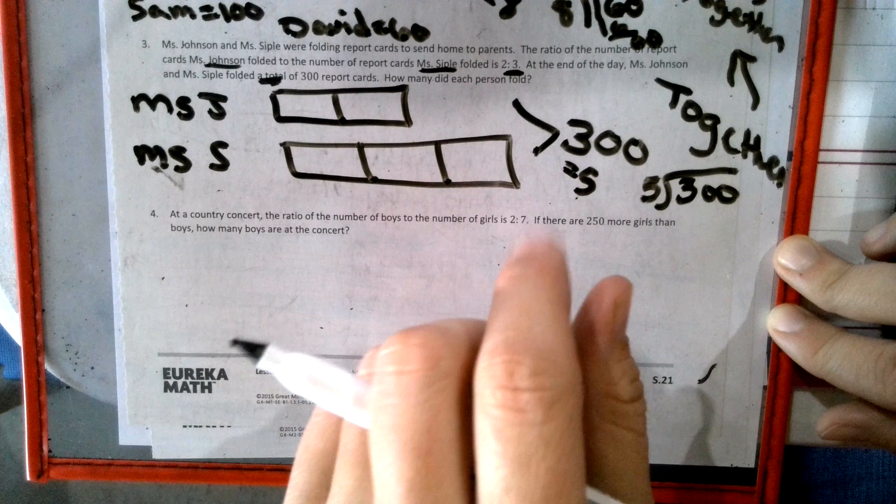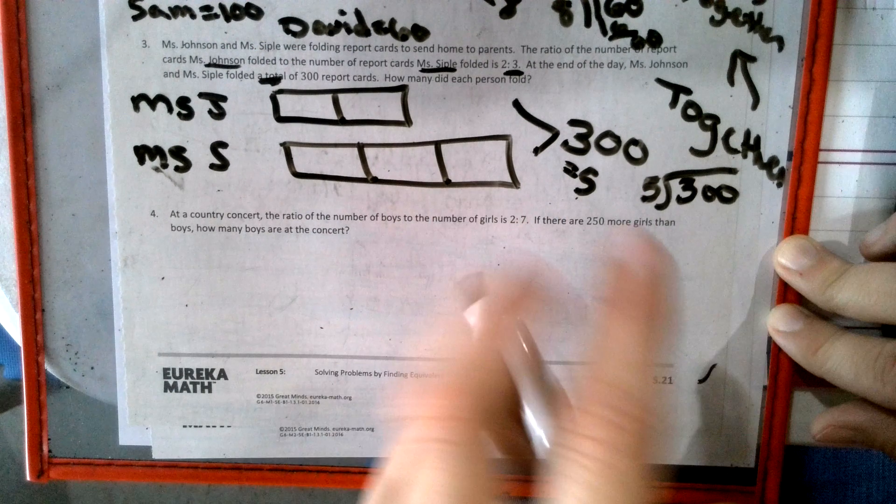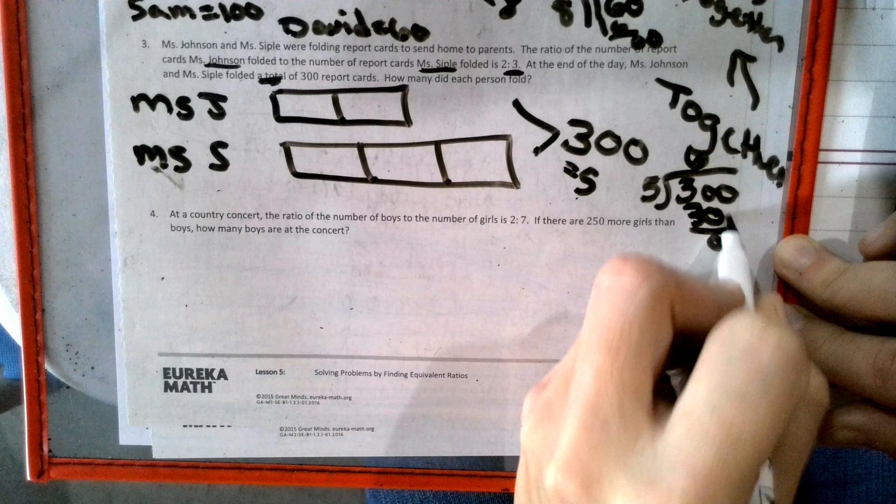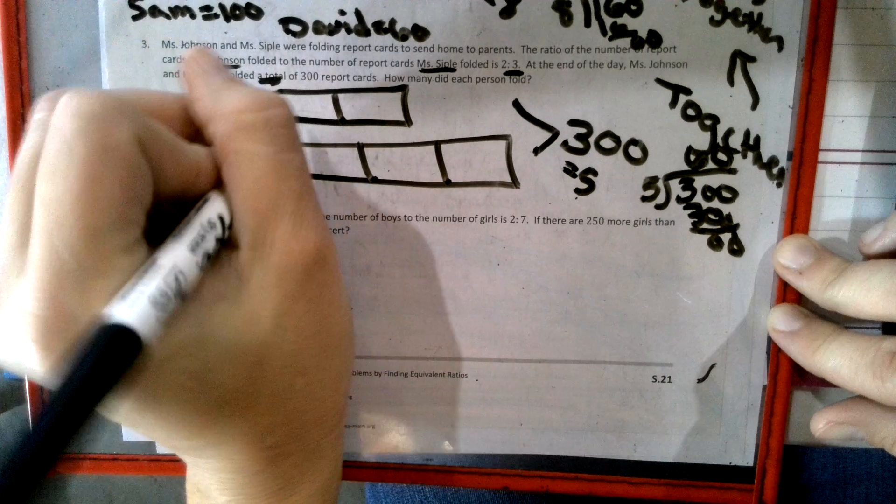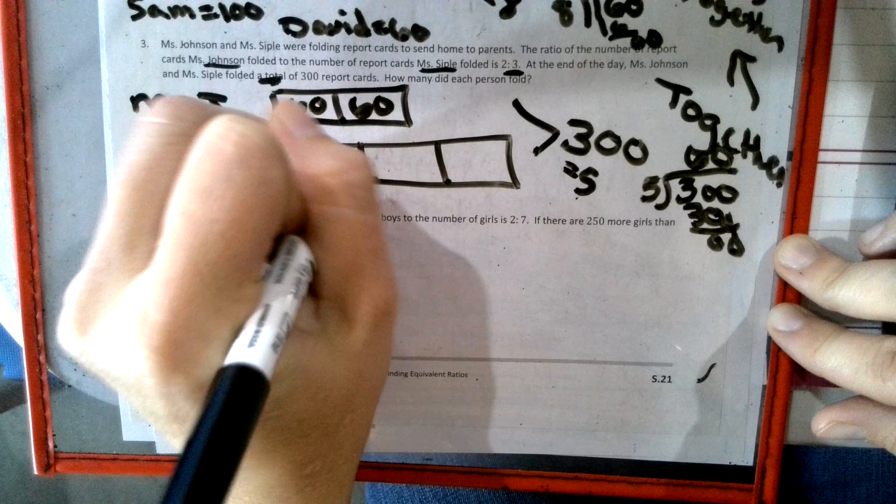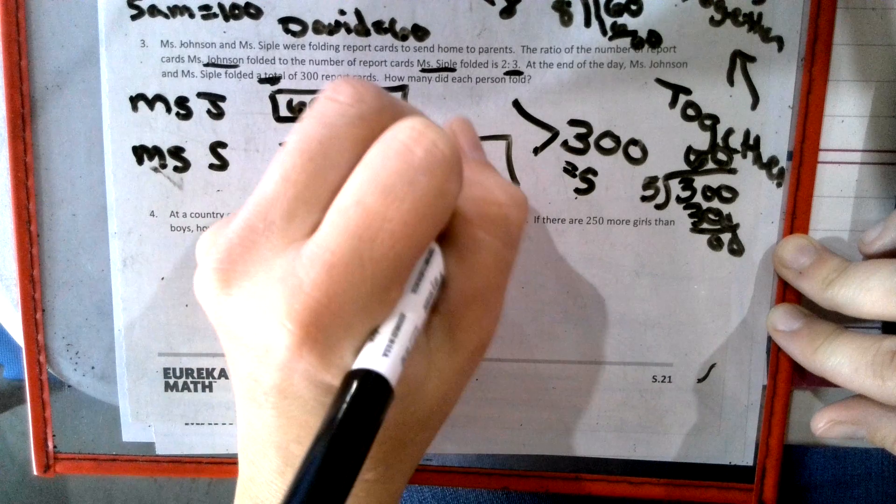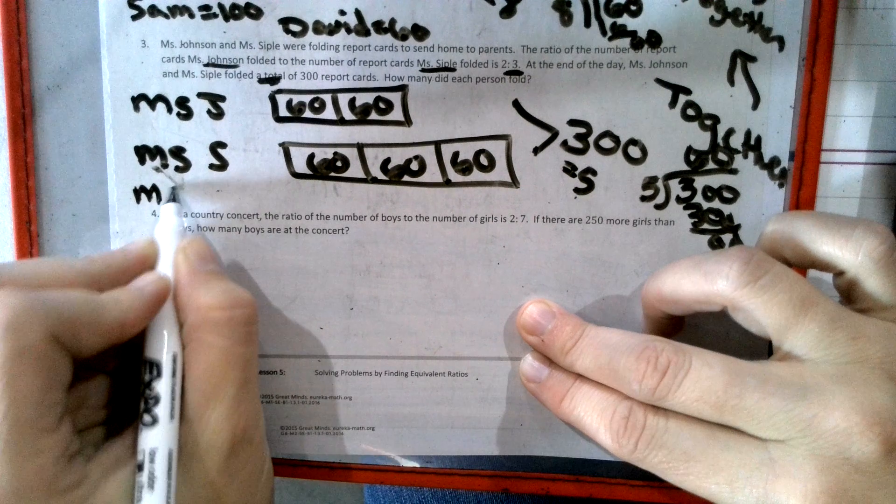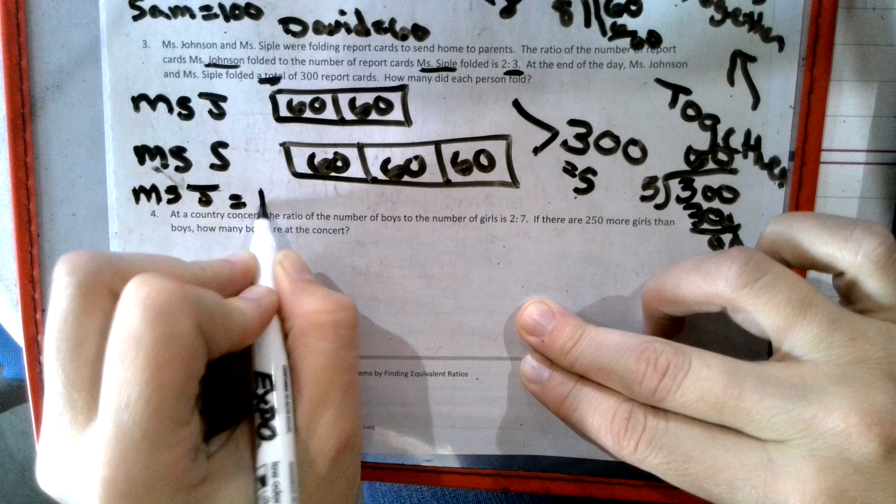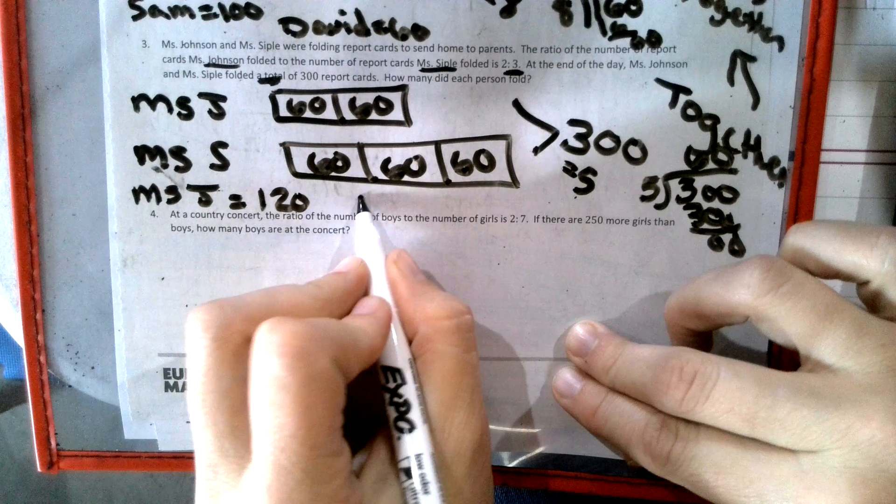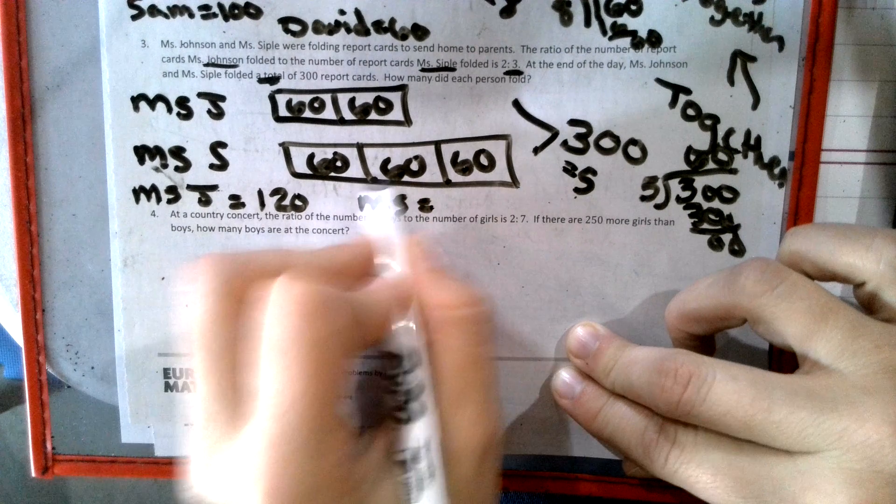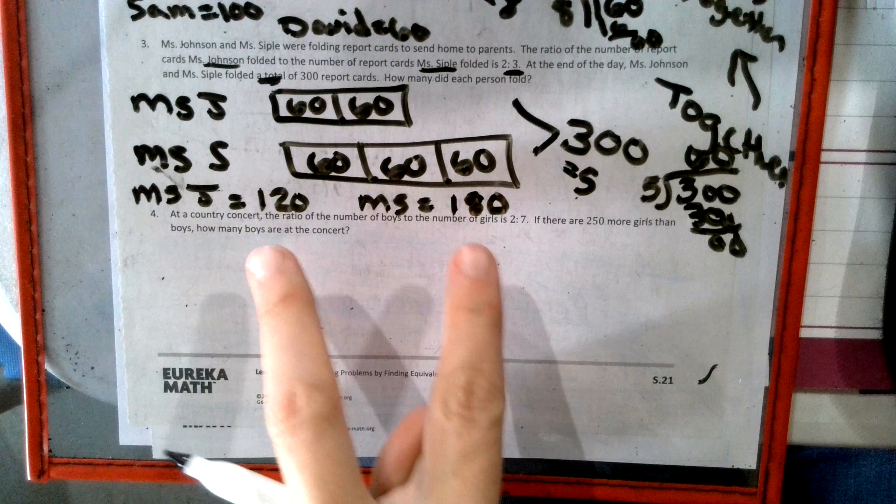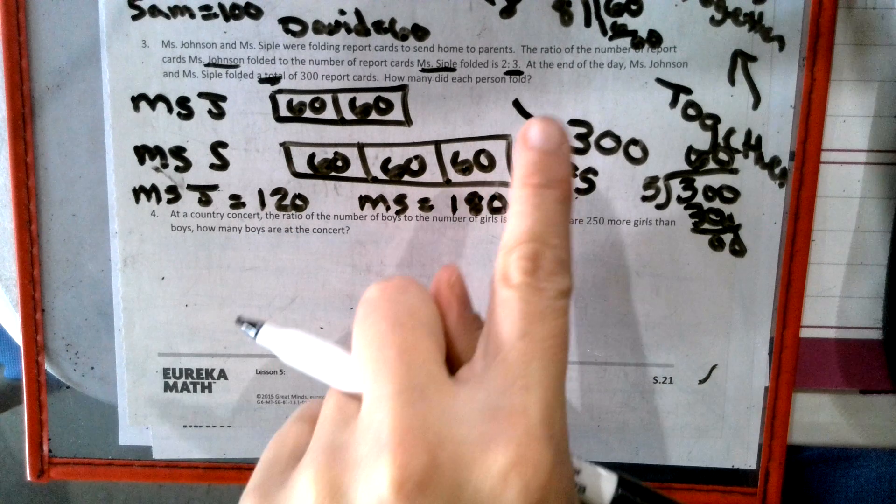For the other ones, we have to find out who's got more boxes and by how many. So five goes into 3 six times to make 30. Bring down our zero. 60. 60 is going in each box. So then it asks, how many did each person fold? So Miss J folded 120, because that's 60 plus 60. And Miss S folded 6 times 3 is 18. Add a zero. 180. Together, that's 300.